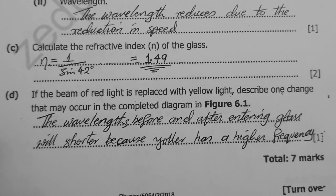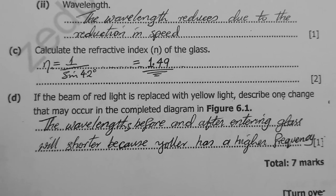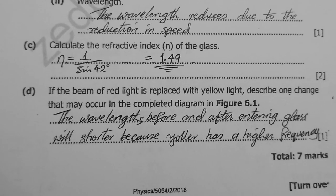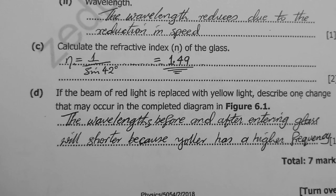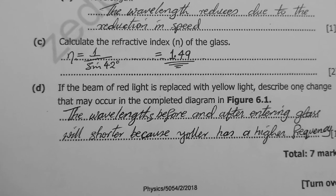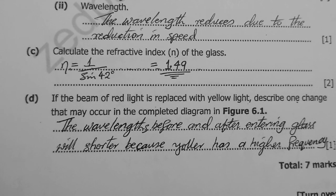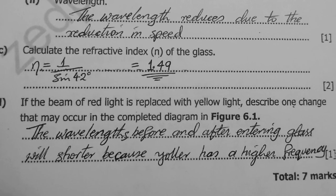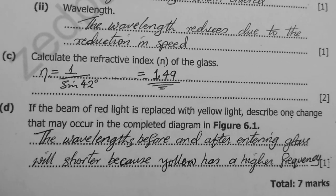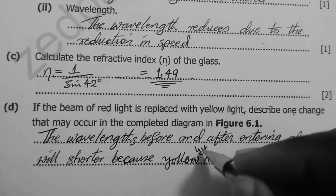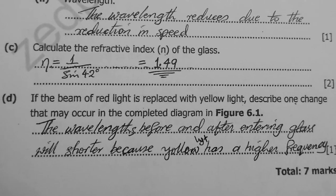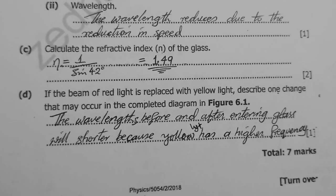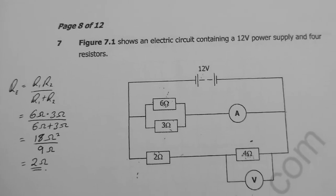Part d: if the red light is replaced with yellow light, describe one change in the diagram. All electromagnetic waves travel at the speed of light, so speed is the same. However, yellow light has a higher frequency than red light, meaning a shorter wavelength. Therefore the wavelengths shown before and after entering the glass would be shorter.